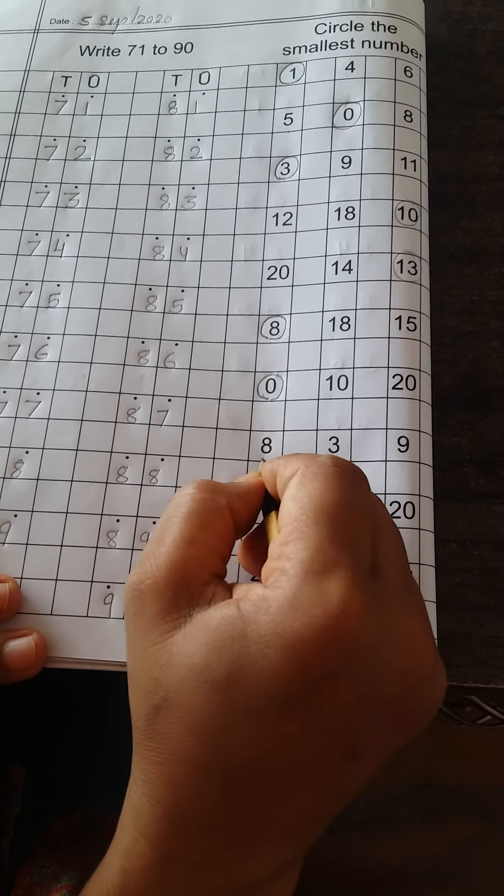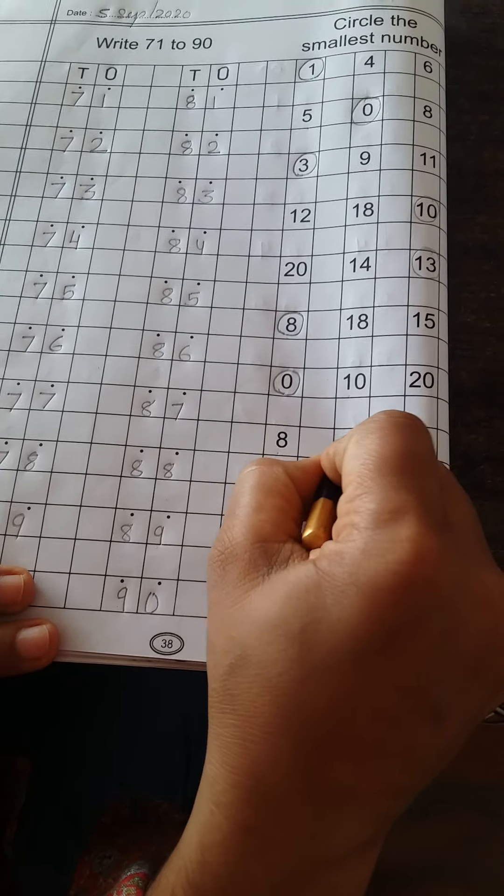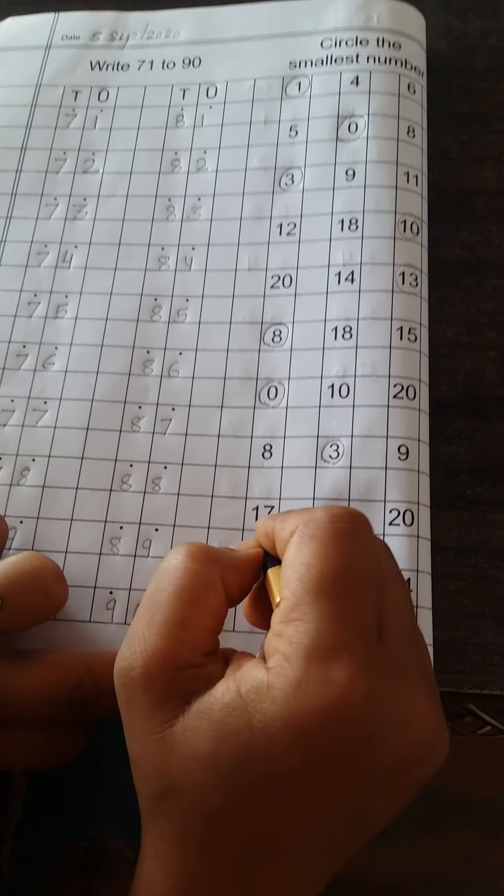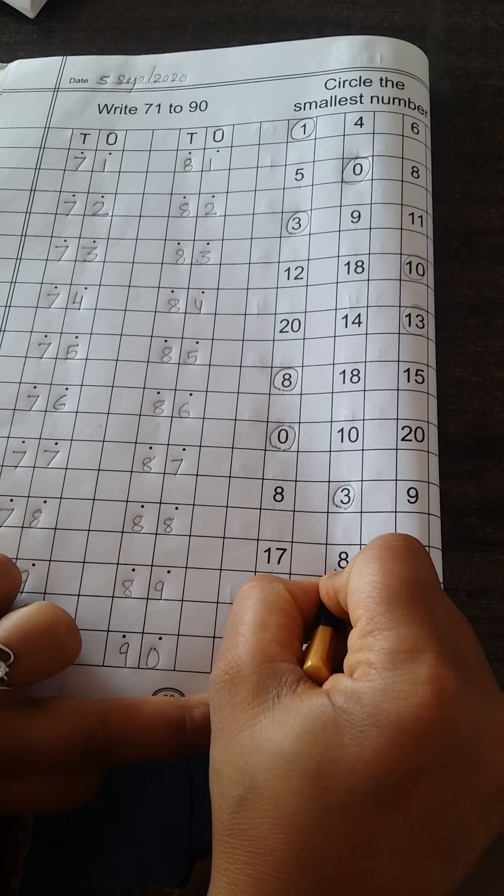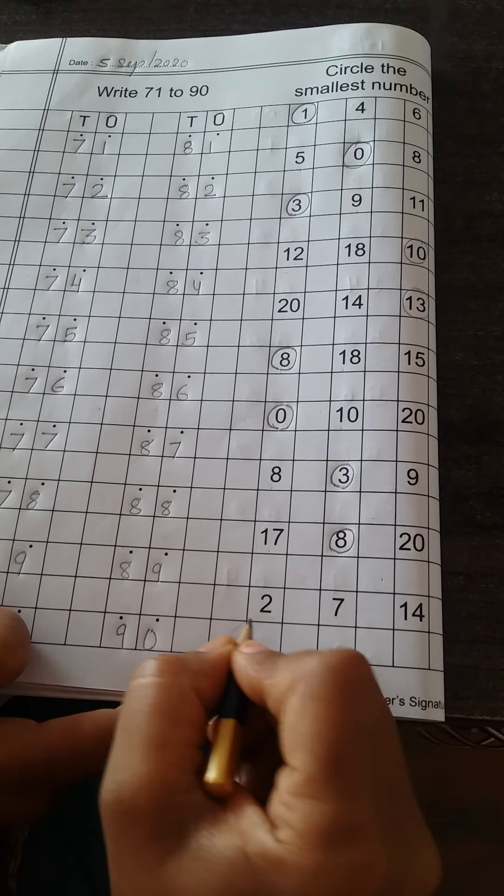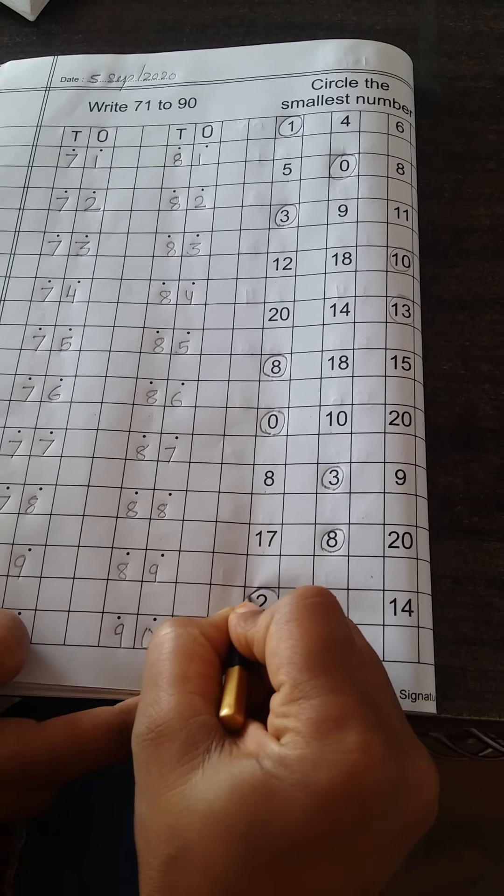Next. 8, 3, and 9. 3 is smallest number. Next. 17, 8, and 28 is smallest number. And last. 2, 7, and 14. 2 is smallest number.